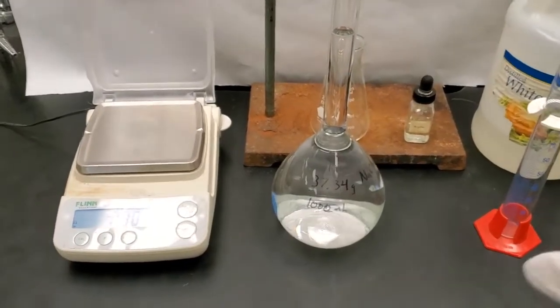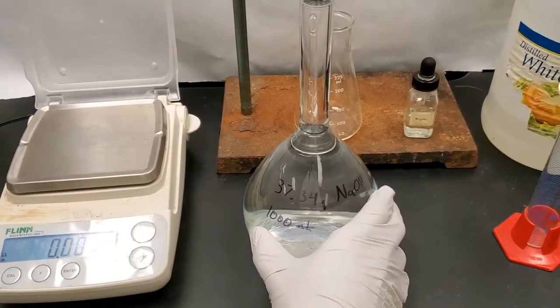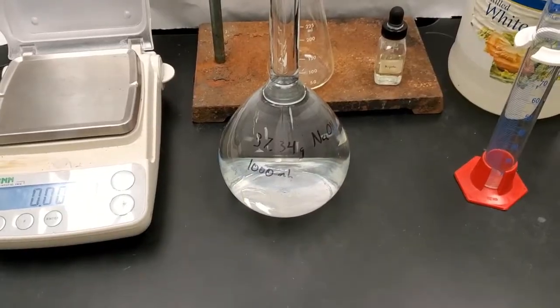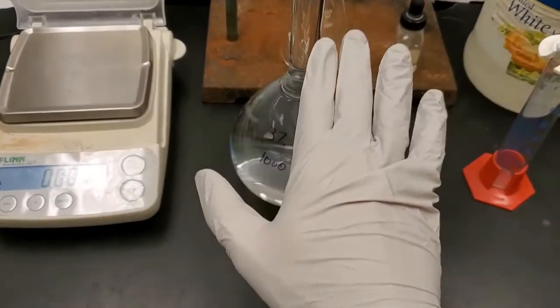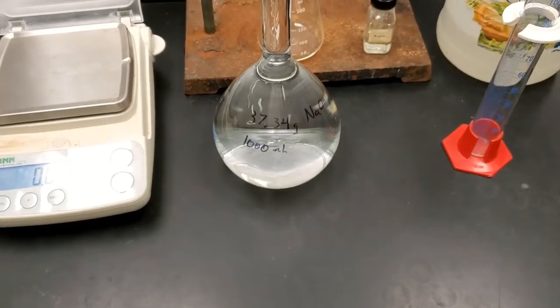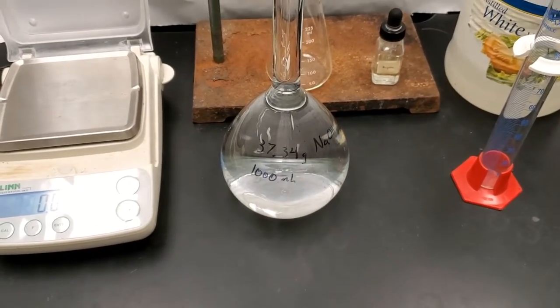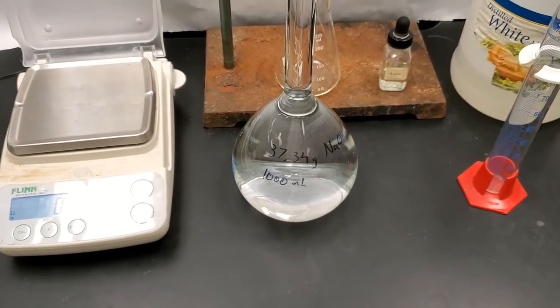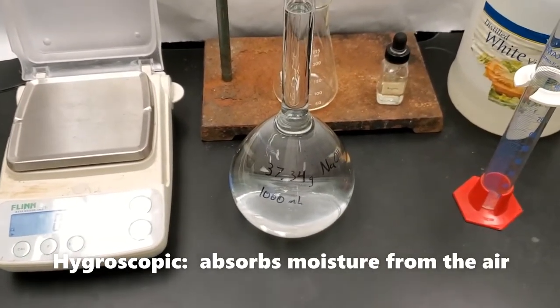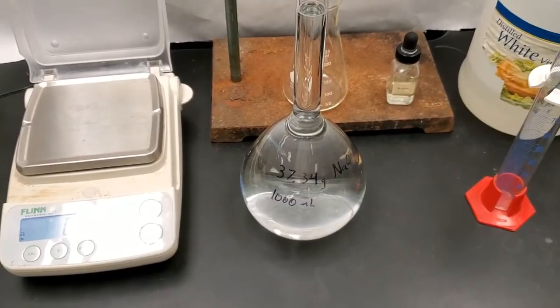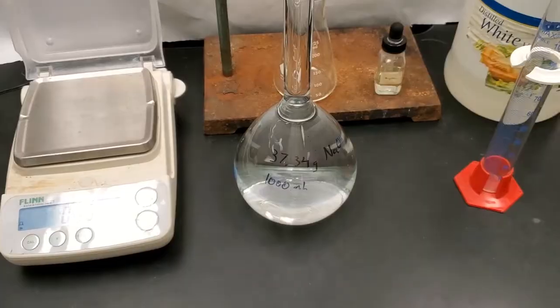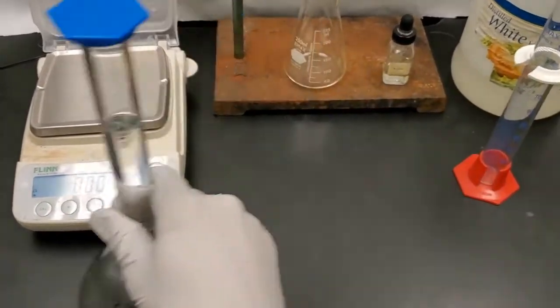Alrighty. So now we have our standard solution. We are going to call this our titrant. It's what we are going to do the titration with. And if you'll notice, I'm wearing gloves now because sodium hydroxide is a base. And even though this is a fairly small concentration, it can still be hygroscopic, which means it absorbs water. And it can be caustic, which means it can eat away at the skin a little bit. So wearing gloves as a safety measure. So we're going to put that to the side for now.